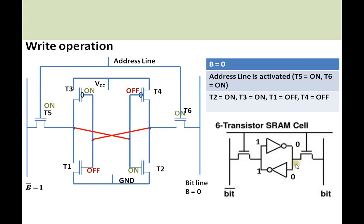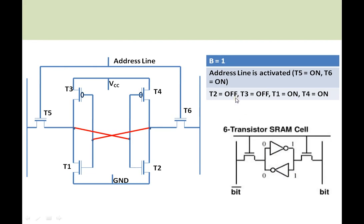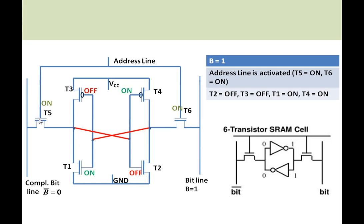Because of that, 0 is retained in the latch formed by inverter 1 and inverter 2. Similarly, whenever bit 1 needs to be written to the SRAM memory cell, the bit line is made 1 and the complement is written to the complementary bit line. The address line is activated, T5 and T6 are switched on, T3 and T2 are switched off, T1 and T4 are switched on, and bit 1 is retained in the latch.